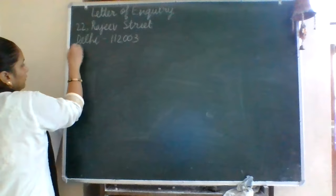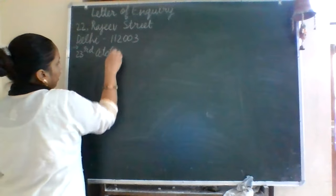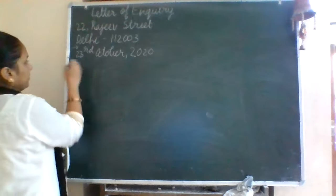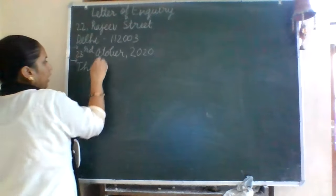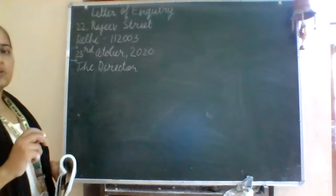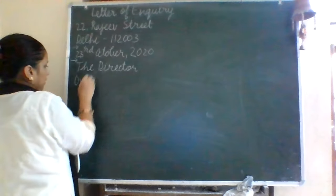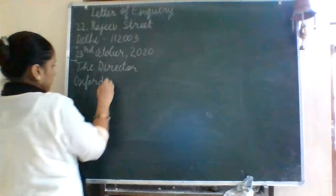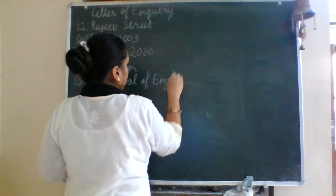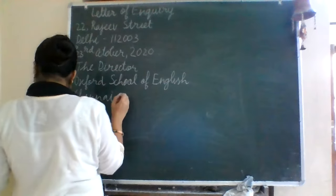Then we will need some space. The date: 23rd October 2020. Now the designation of the person — we will leave the space — the Director. Then the address of the person to whom we are writing: the letter of school, School of English, Chain 9, 6.